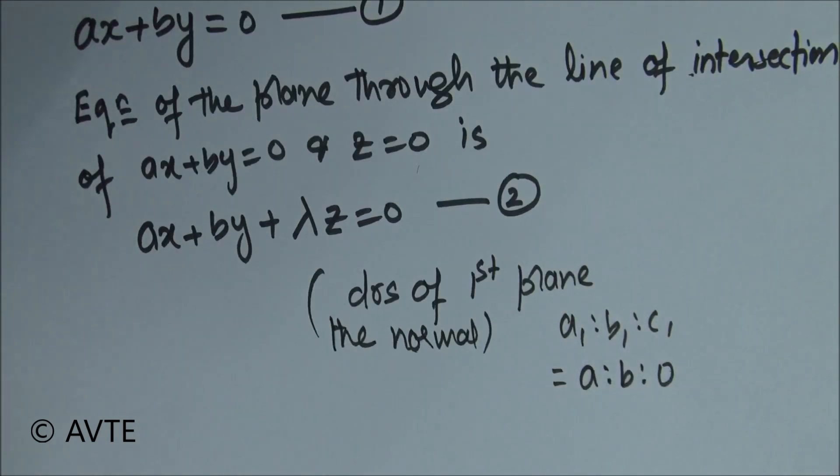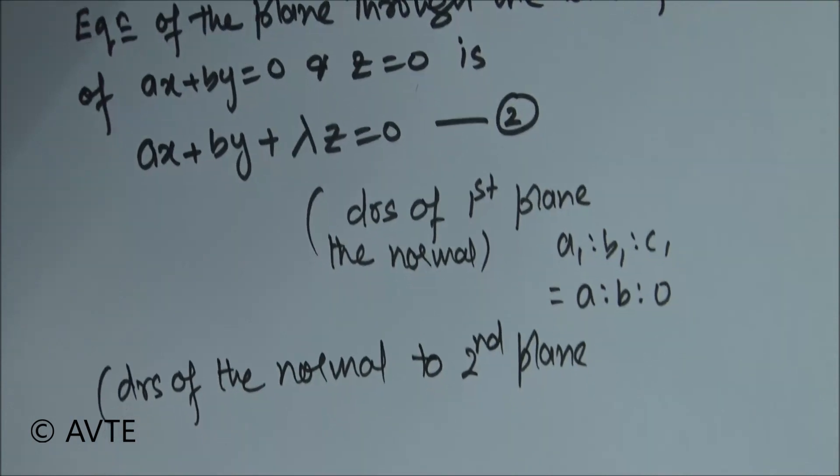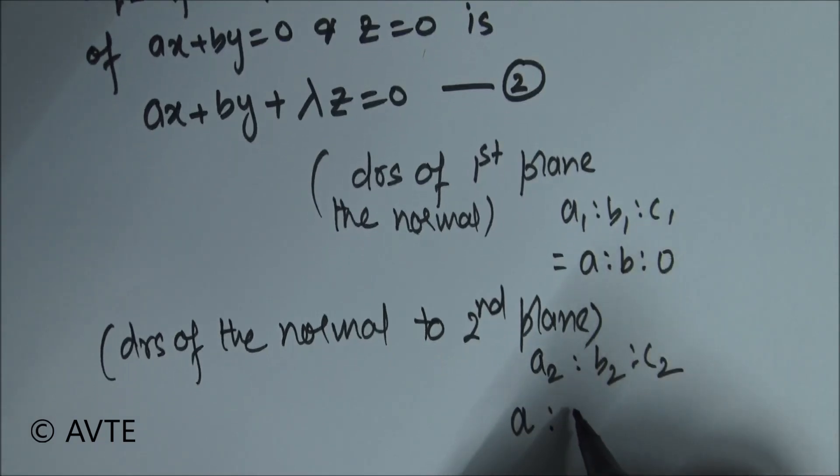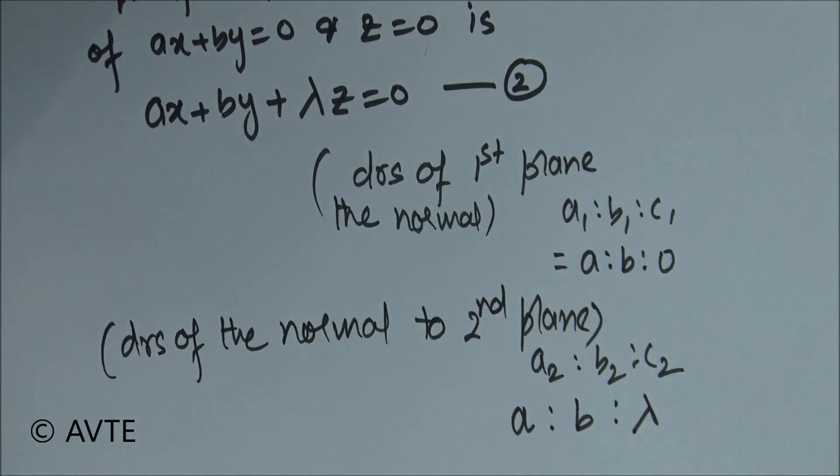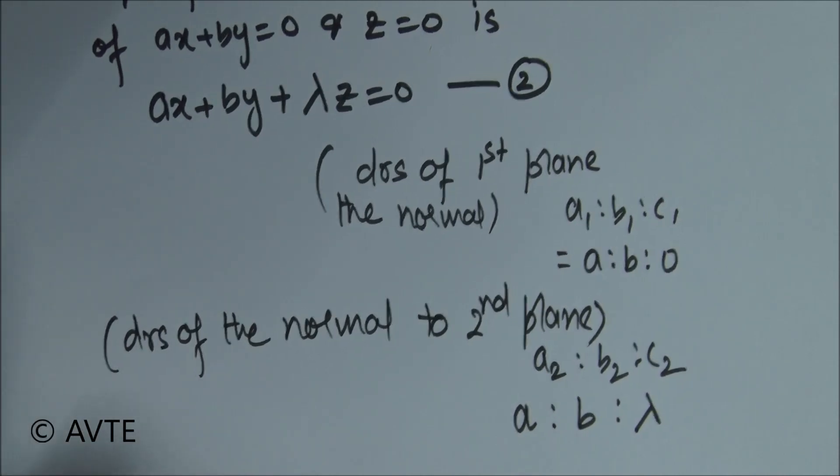What about the direction ratios of the normal to second plane? They are a is to b is to lambda. Now angle between them, the angle between the two planes is alpha, so we'll now apply the angle between the two planes and we'll use the direction ratios of the normal of respective planes. So we get, we know the formula, so applying the formula